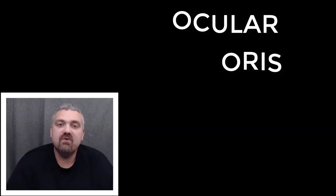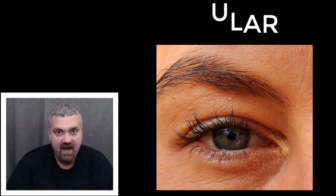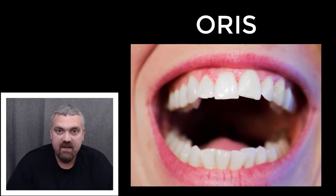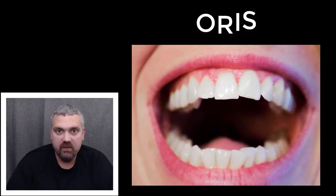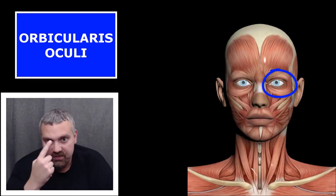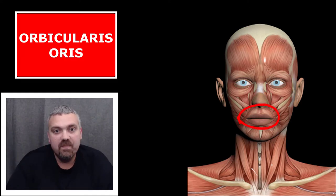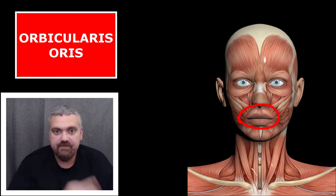Ocular versus oris. Ocular — think binoculars, think oculars on your microscopes — think eye. Oris — think orator, or an oral exam, or an oral report — oris means mouth. So the orbicularis oculi is a circular muscle around the eye, whereas the orbicularis oris is a circular muscle around the mouth.